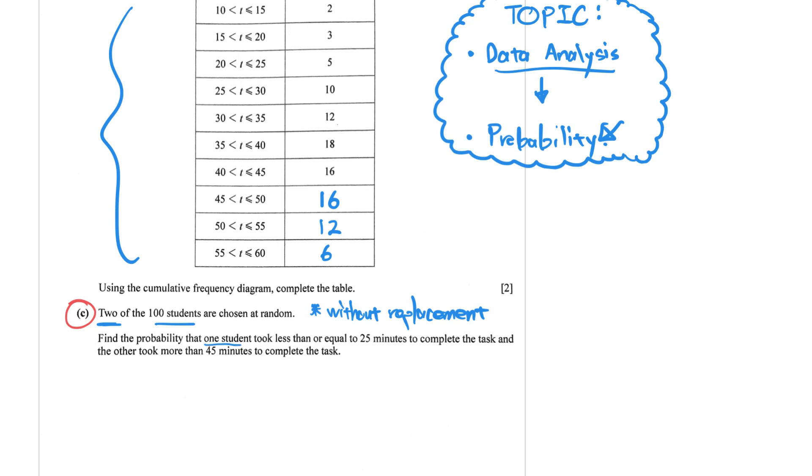Find the probability that one student took less than or equal to 25 minutes. So this is a clue, less than or equal to 25 minutes. So we're talking about all of these students in terms of a count. Second one took more than 45 minutes. So 45 minutes is here and here, more than. So I will take 16, 12 and 6.